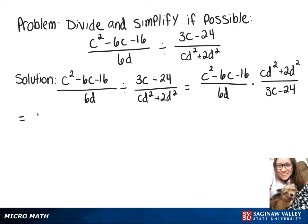Combining that into one fraction, we have c squared minus 6c minus 16 times cd squared plus 2d squared over 6d times 3c minus 24.